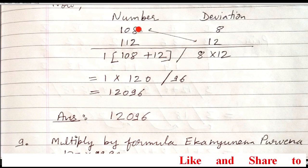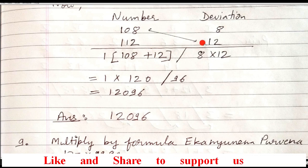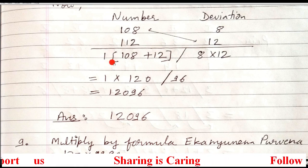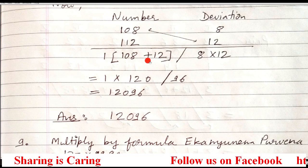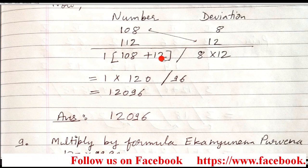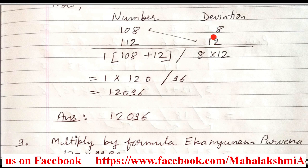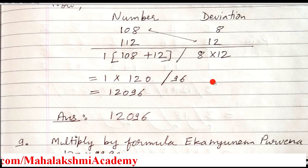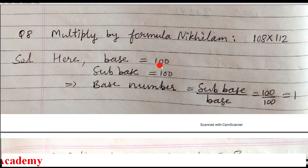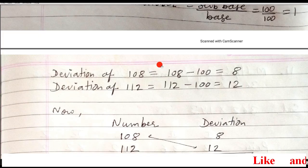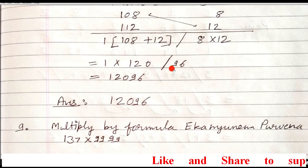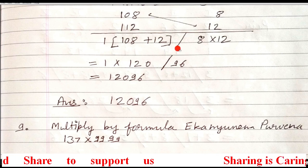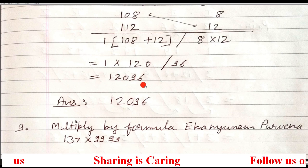I take 108 and 12 as the pair. Start with the base number, which is 1, then write the chosen pair with their signs. Multiply the deviations: 8 times 12 is 96. And 120 multiplied by 1 is 120. In the base, there are two zeros, so in the second section, two digits should exist — no need of shifting as in the previous question. Remove the slash, and the answer is 12,096.